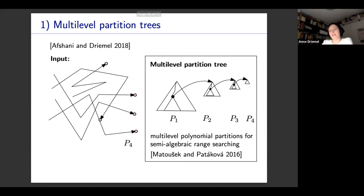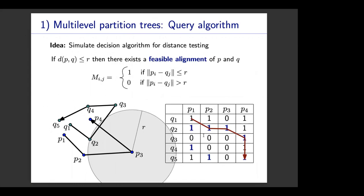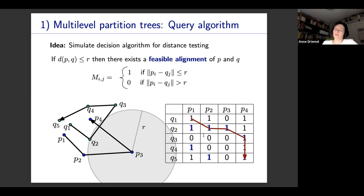These multi-level partition trees are organized so that we can answer queries with semi-algebraic ranges — unions and intersections of zero sets of polynomials. To understand this better, consider how we evaluate whether the discrete Fréchet distance between two curves is smaller than a threshold R. This is normally solved using dynamic programming: we look at the distance matrix of the vertices of the two curves, and try to find a monotone path from (1,1) to (m,m), only visiting entries where the two corresponding vertices are within Euclidean distance R from each other.